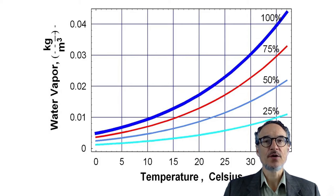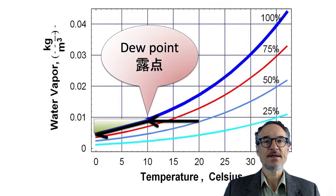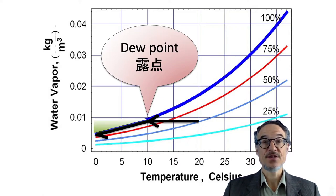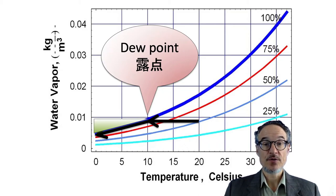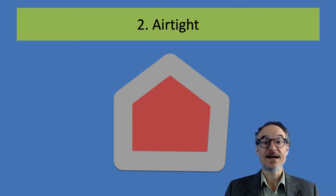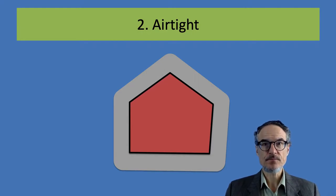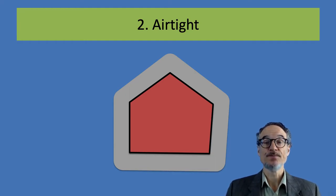What's happening in terms of this graph is the temperature's dropping, the humidity is going up, and then it hits the dew point. We don't want the dew point to happen inside the walls if it's not airtight. So to stop this, we need an airtight building.